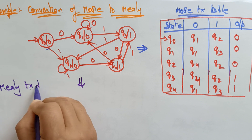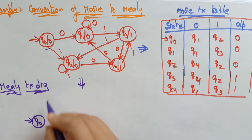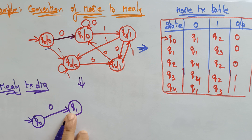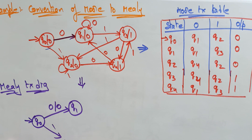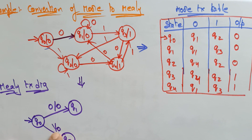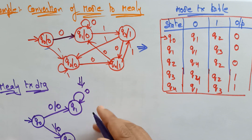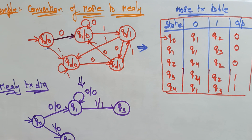Now let me draw the Mealy transition diagram. It's very simple. Starting with initial state q0: q0 on zero goes to q1, and the output it generates is zero. Q0 on one goes to q2, and the output here is zero — the output of q2 is zero. Now coming to q1: q1 on zero goes to q1 itself, and the output is zero. Q1 on one goes to state q3, and the output of q3 is one.